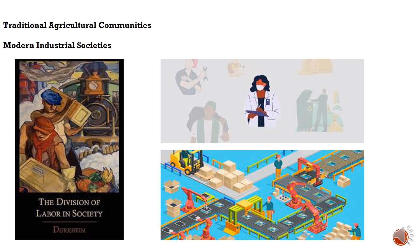Durkheim's concept of division of labor is vividly illustrated through examples from both traditional and modern societies. In traditional agricultural communities such as rural villages in India, individuals often engage in similar tasks related to farming and subsistence agriculture. Members of a farming community may collectively cultivate crops, tend to livestock, and harvest agricultural produce. This shared involvement in agricultural activities fosters a sense of mechanical solidarity, where individuals bond over shared traditions, values, and communal labor, reinforcing social cohesion and mutual dependence.